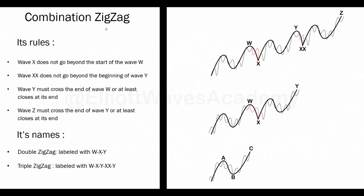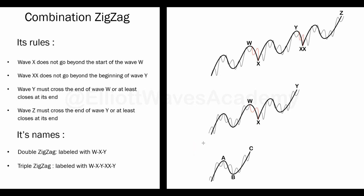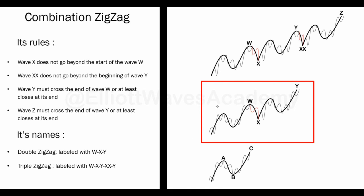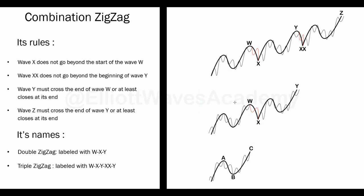Now let's speak about the other forms of the zigzag pattern. We have three forms of the zigzag. The first one is the simple zigzag we were speaking about previously. The second form is the double zigzag, and we label it with W, X, Y. We have two zigzags combined with each other through a combination wave called wave X. This wave X can also be a zigzag pattern — either a simple zigzag, a double zigzag, or even a triple zigzag. So when we see two zigzags combined with each other, we call it a double zigzag, which is a combination wave.